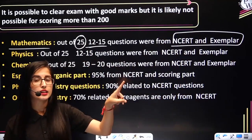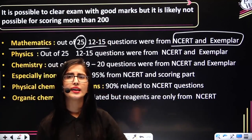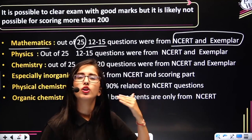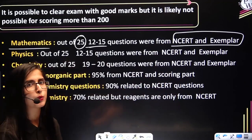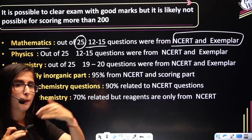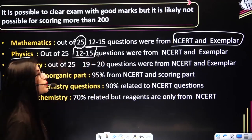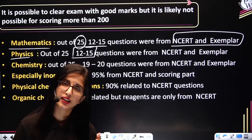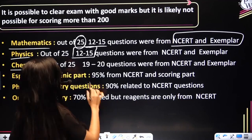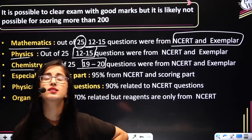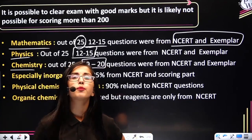NCRT Exemplar questions also come from there. So that is 12 to 15 questions out of 25. The rest — 10 to 13 questions — come from higher-level reference books. So very roughly, half the questions are from NCRT and half from other reference books. Physics survey also shows a similar pattern: 12 to 15 questions from NCRT Exemplar or NCRT textbook directly. Next, chemistry: out of 25 questions, 19 to 20 questions come from NCRT and Exemplar.